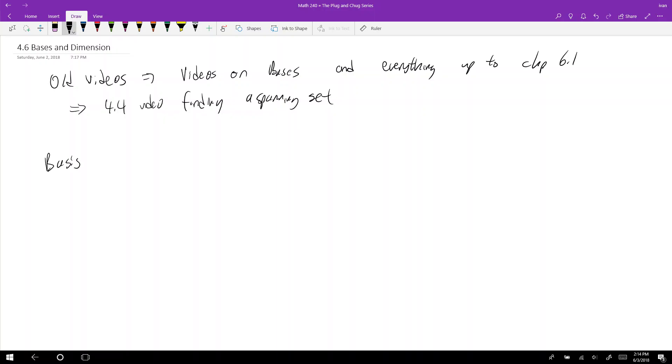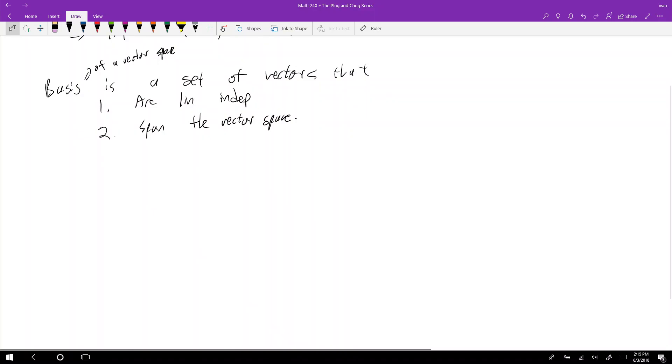Speaking of which, let's transition into that. What is a basis? Why is the video in 4.4, why did I actually find a basis when I was trying to find a spanning set? Well, that's because a basis is a set of vectors that are linearly independent, and the set of vectors need to span the vector space.